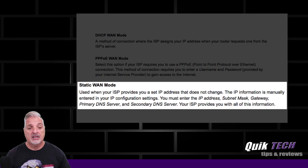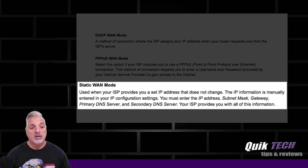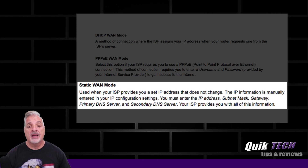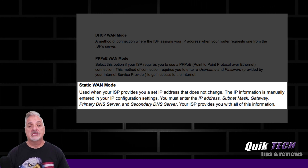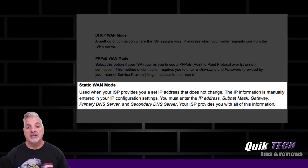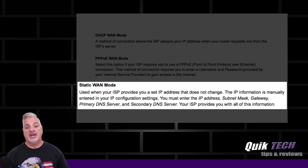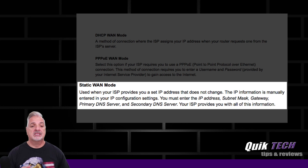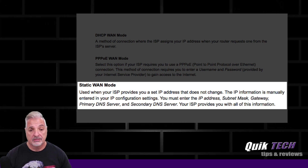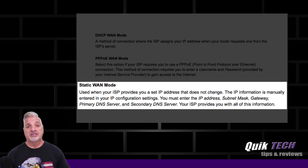And then finally, a static IP WAN mode is used when your ISP provides you a set IP address that does not change. The IP information is manually entered in your IP configuration settings. You must enter the IP address, subnet mask, gateway, primary DNS server, and secondary DNS server. Your ISP should provide you with all of this information.